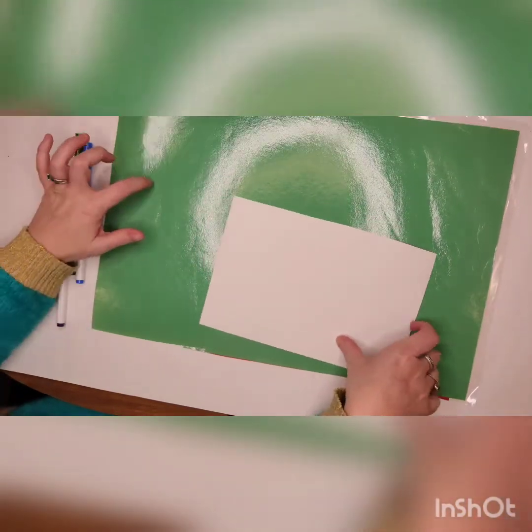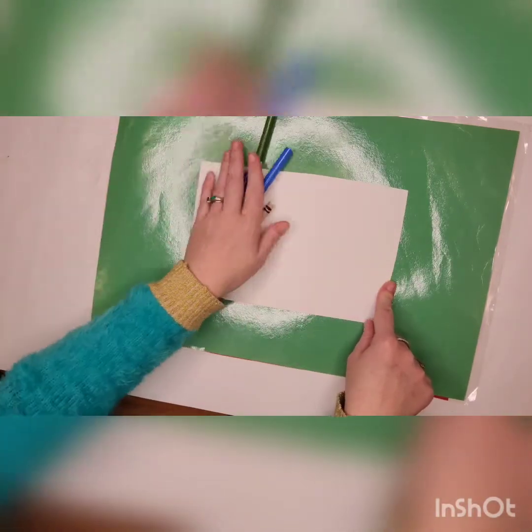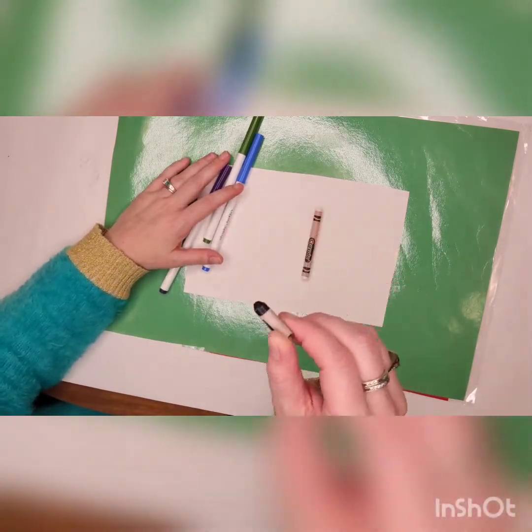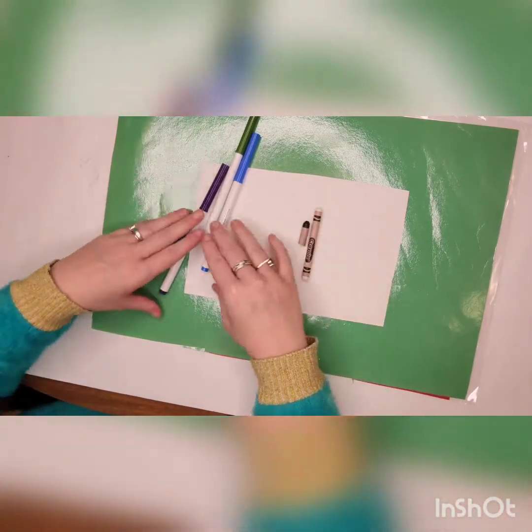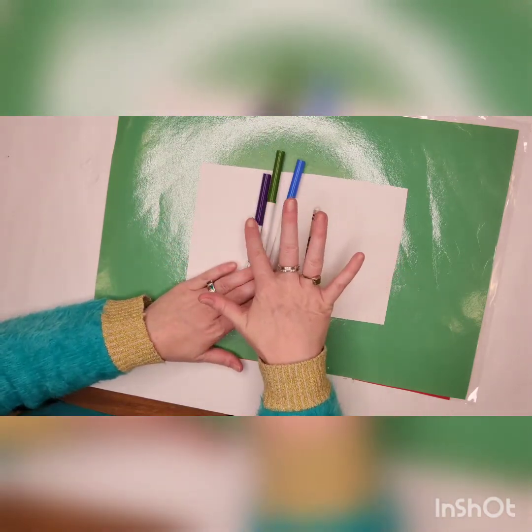We need our messy mat, we need our paper going horizontal, we need a white crayon, a black crayon - notice mine is very teeny tiny, it still works just fine - and then our cool color markers. So I have blue, green, and purple.